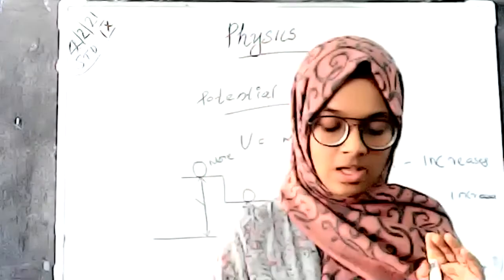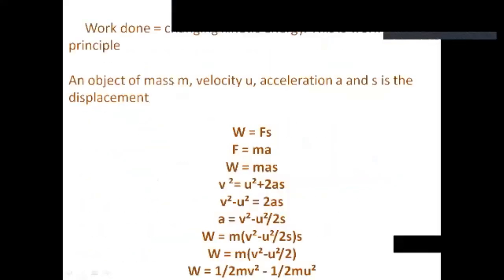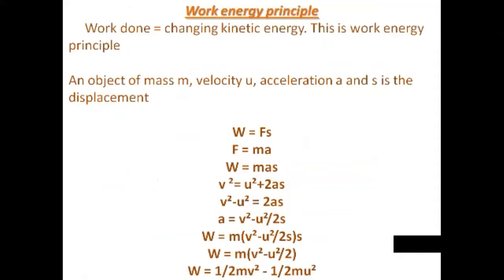Next we discuss the work-energy principle. Kinetic energy has an equation K is equal to half mv square. The change in kinetic energy is equal to the work done by an object — this is the work-energy principle. Work done is equal to change in kinetic energy. The change in kinetic energy is W is equal to half mv square minus half mu square. This relation shows the work-energy principle.